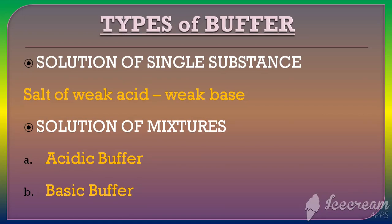Now, the classification of buffer solutions — there are two categories. The first is a solution of a single substance, where one compound acts as a buffer; this is a salt made of a weak acid and a weak base. The second is a mixture that acts as a buffer, which has more applications. The mixture buffer is of two types: acidic buffer and basic buffer. We will now read them in detail.